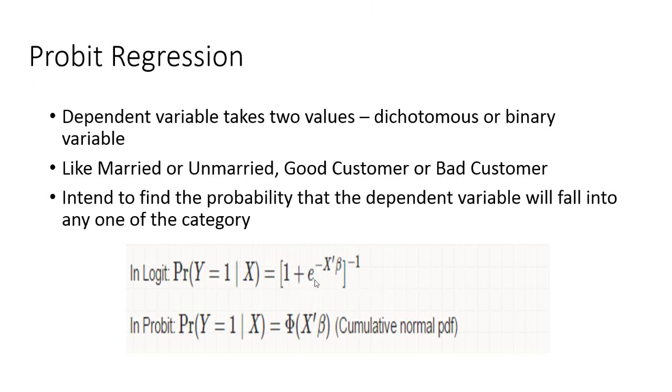Whereas we have the exponential term, in Probit regression the left hand side is the same probability that Y equals 1 given X, but it is a linear combination of the independent variables, and that combination follows the cumulative normal probability density function.